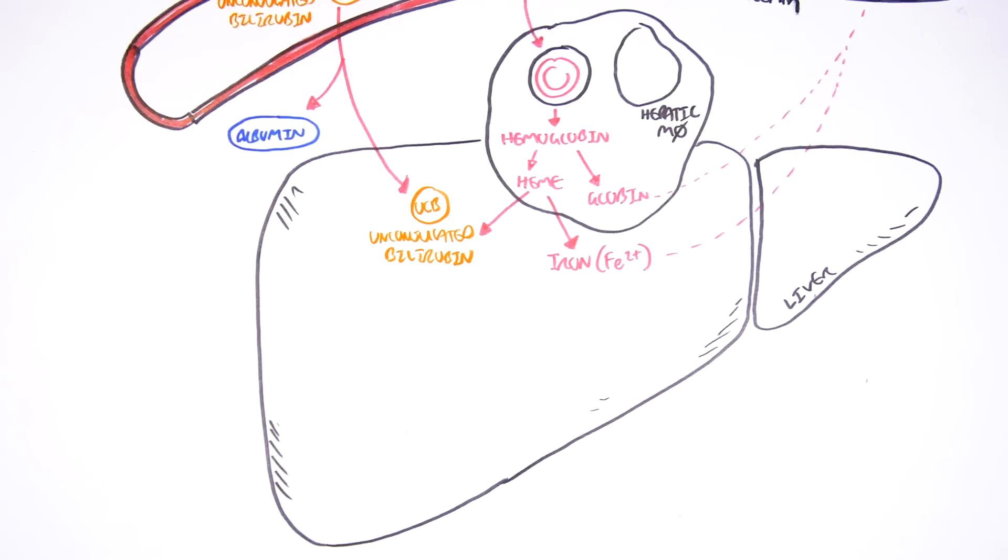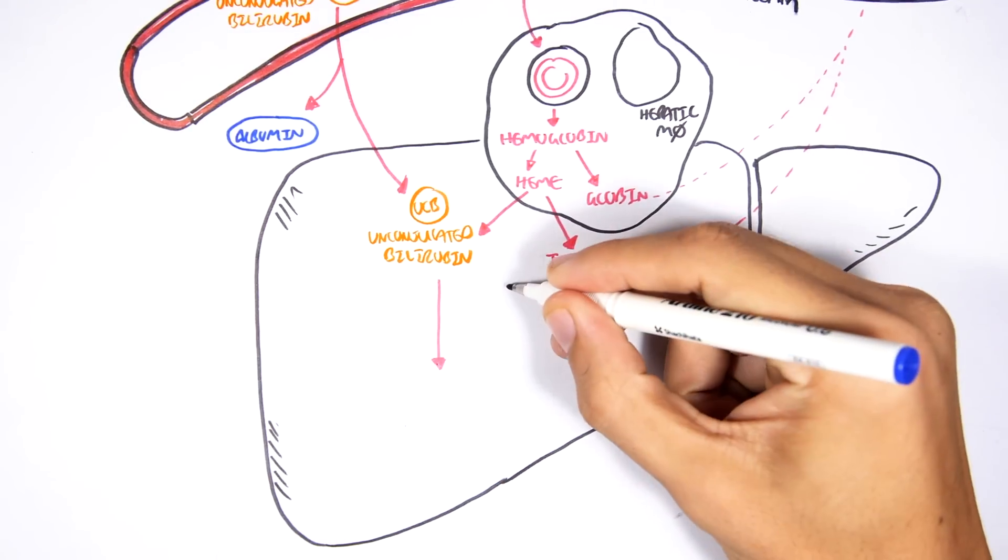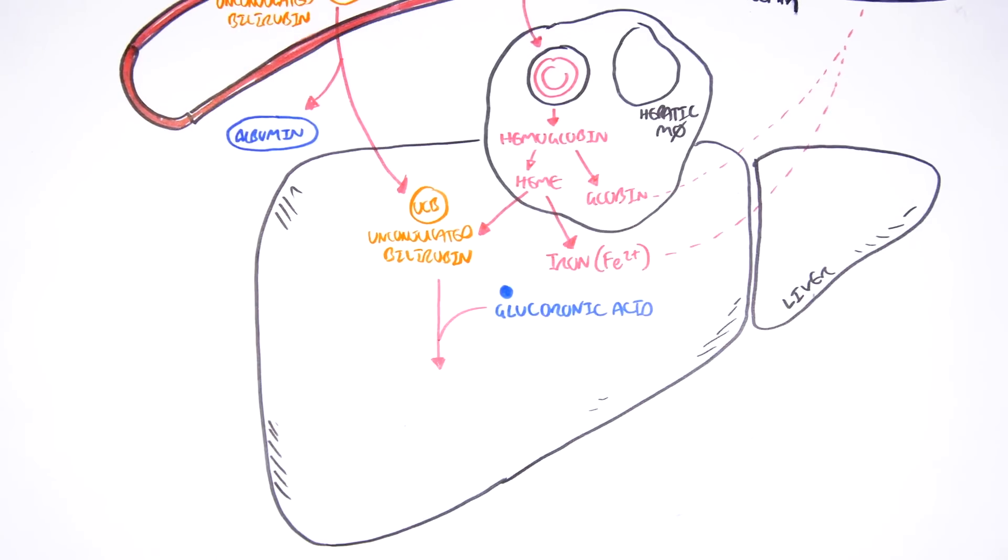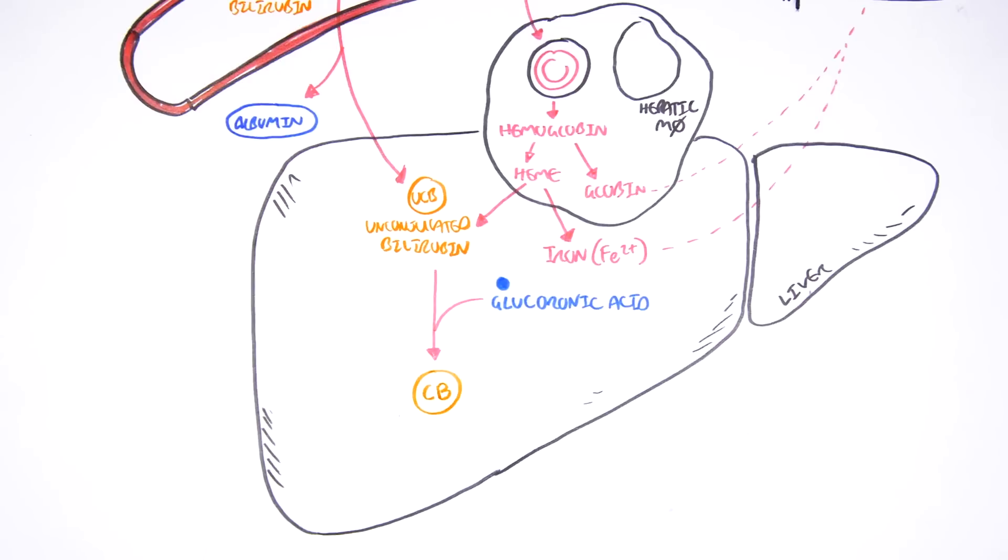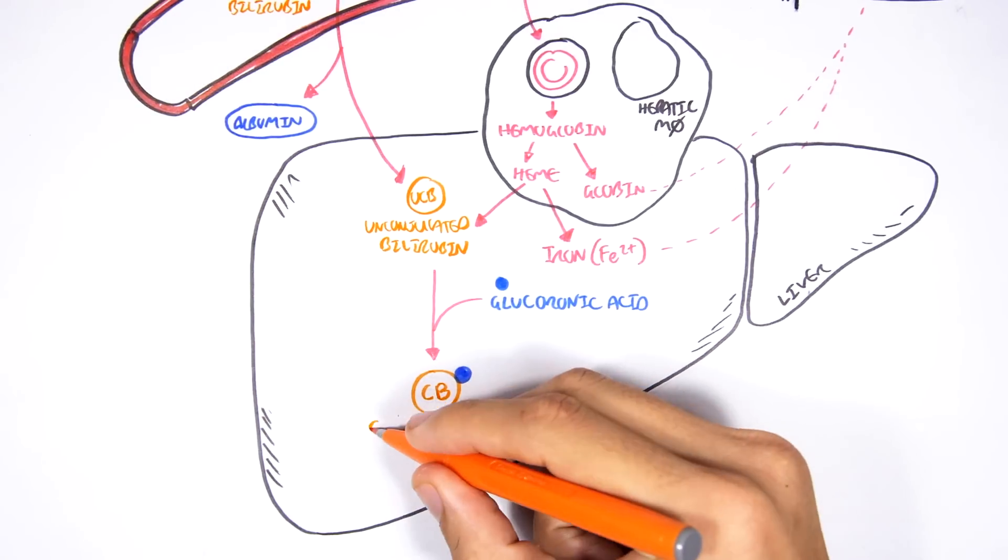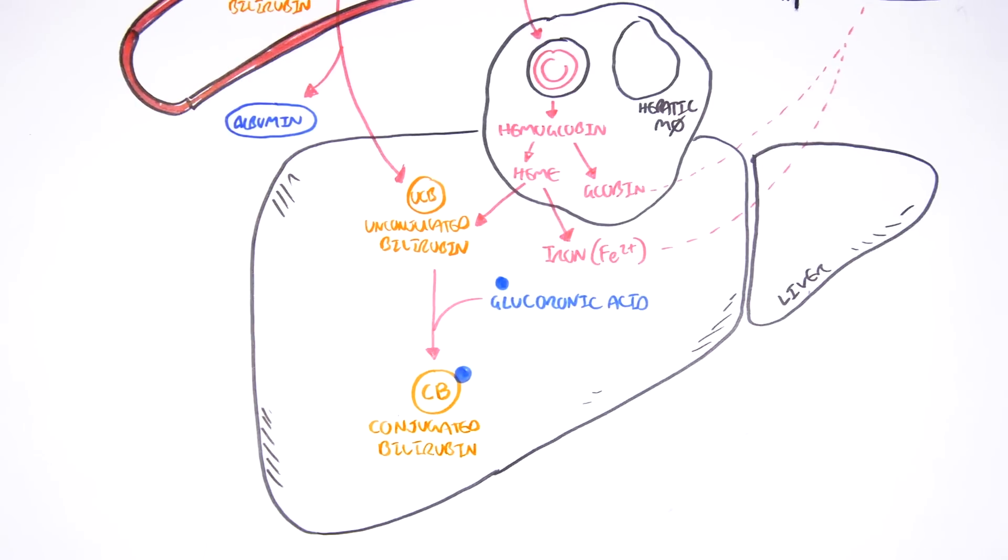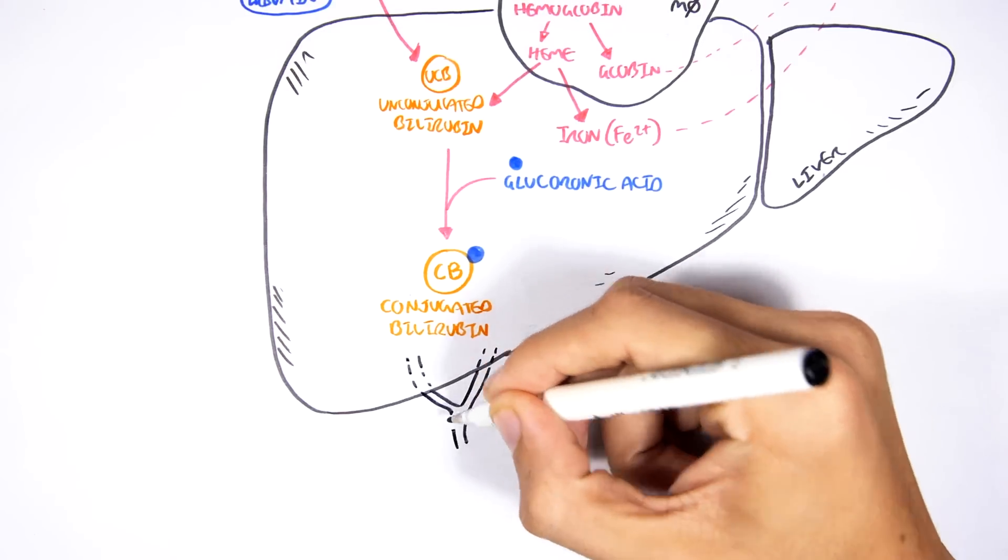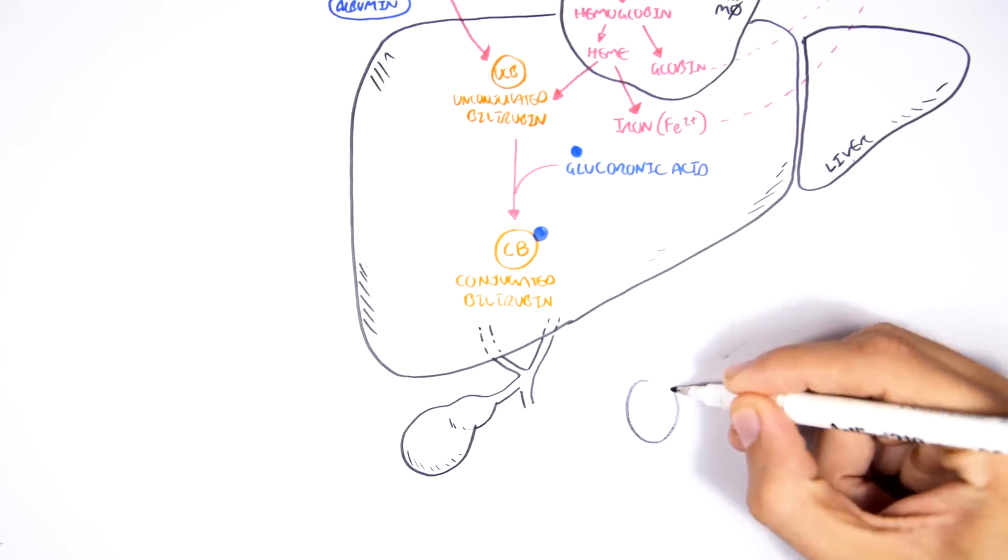What happens in conjugation is that the unconjugated bilirubin will be converted to conjugated bilirubin with the addition of glucuronic acids. The conjugated bilirubin is now water-soluble. So it's an important concept to know that the unconjugated bilirubin was lipid-soluble, whereas the conjugated bilirubin is water-soluble.